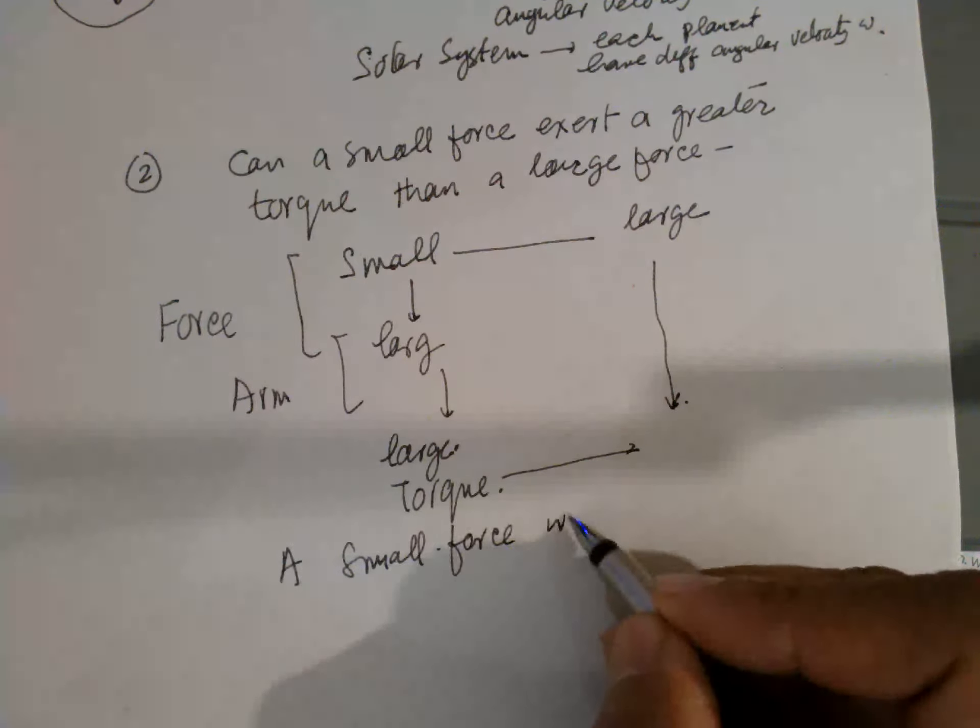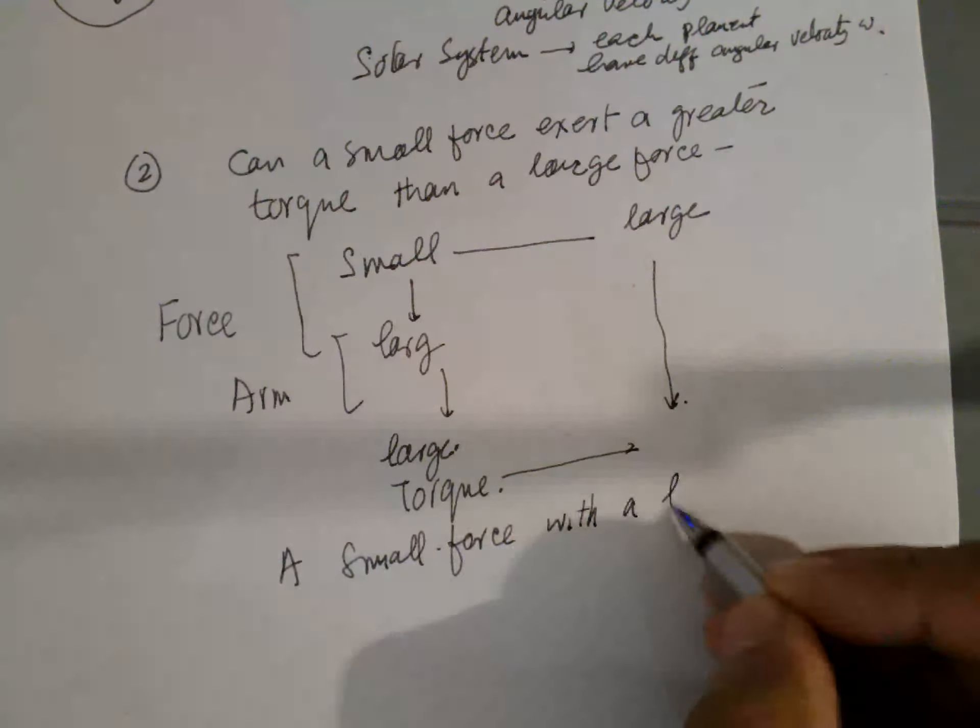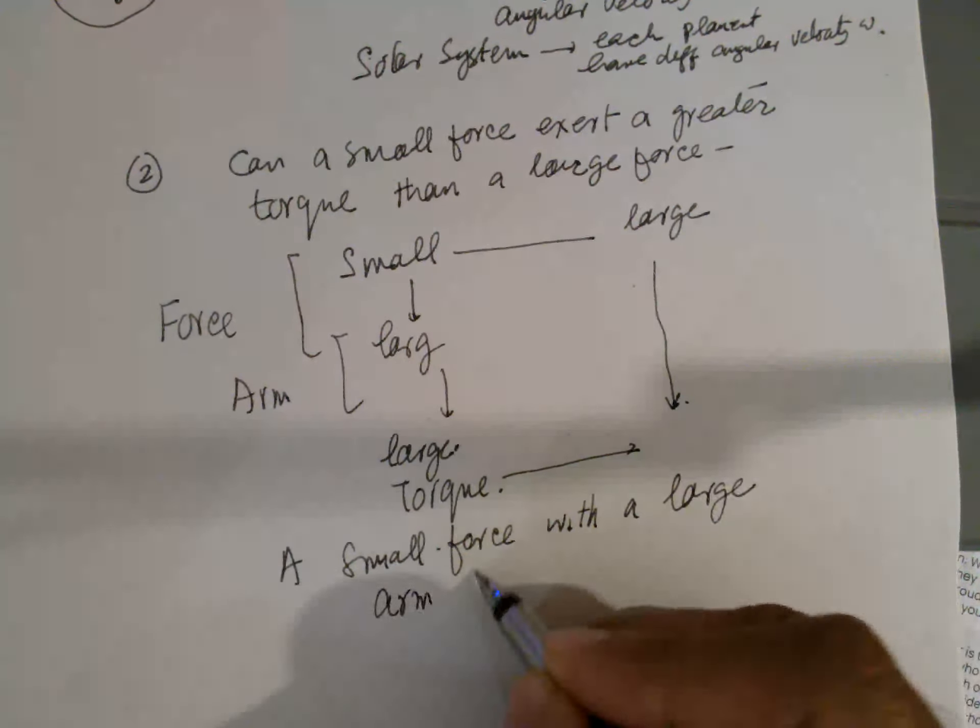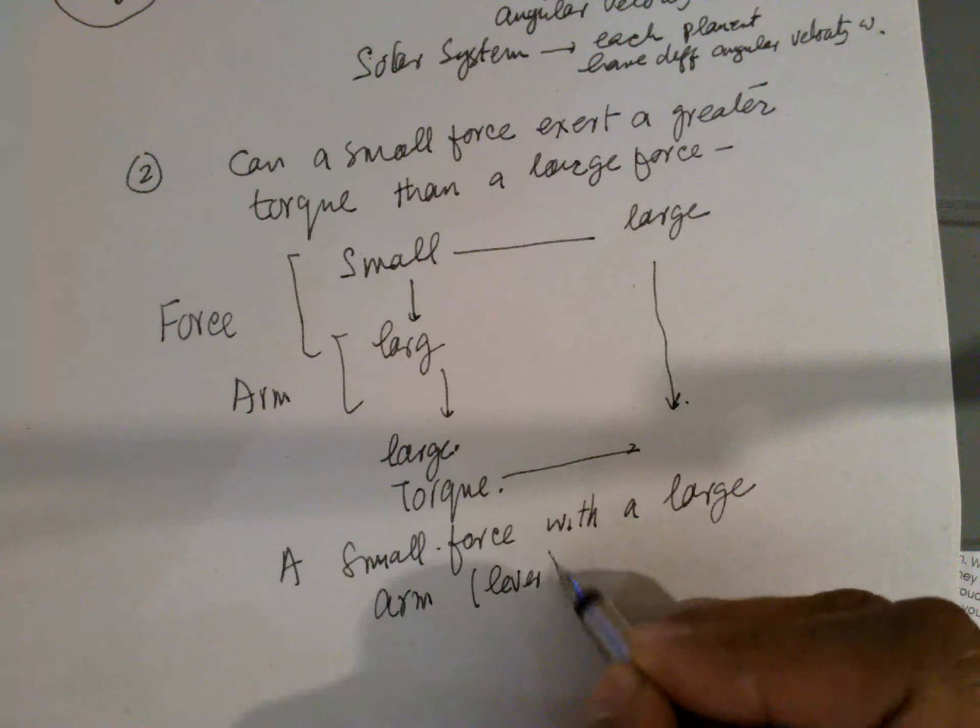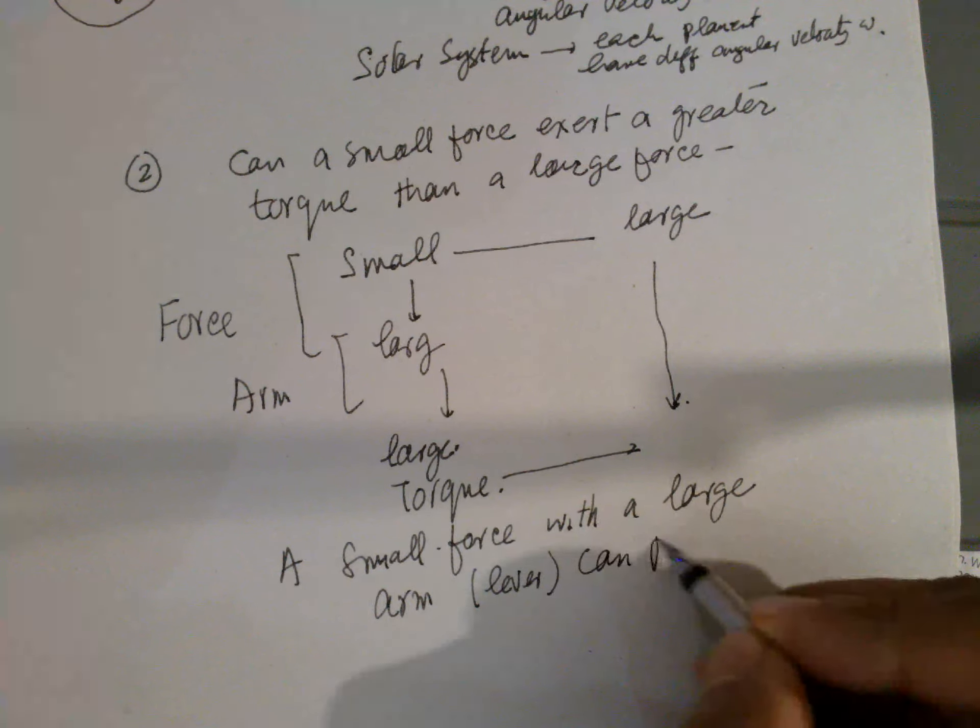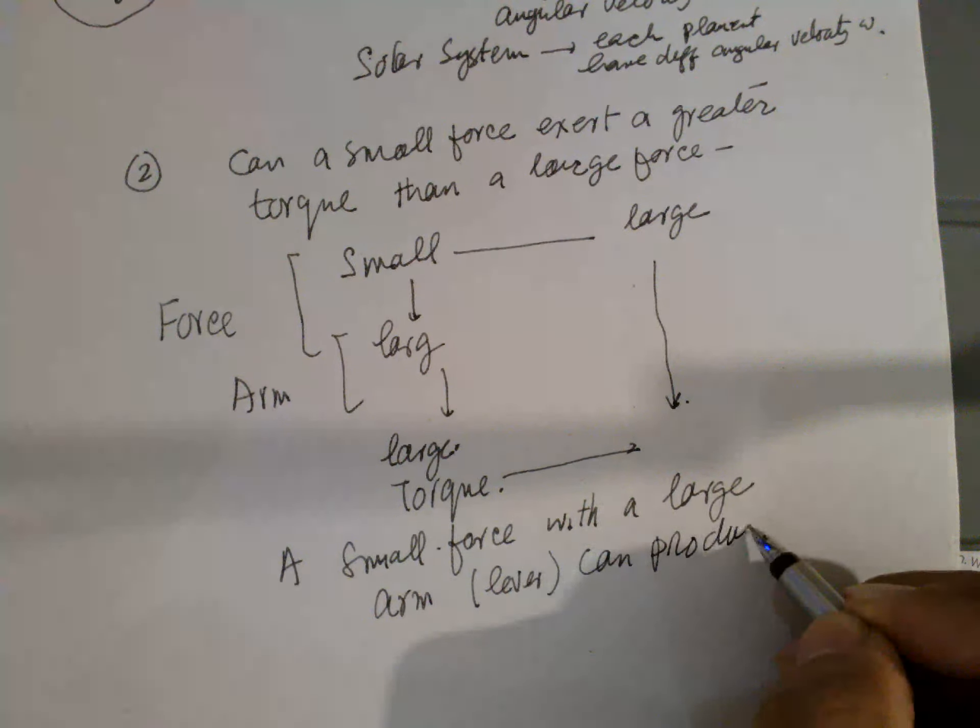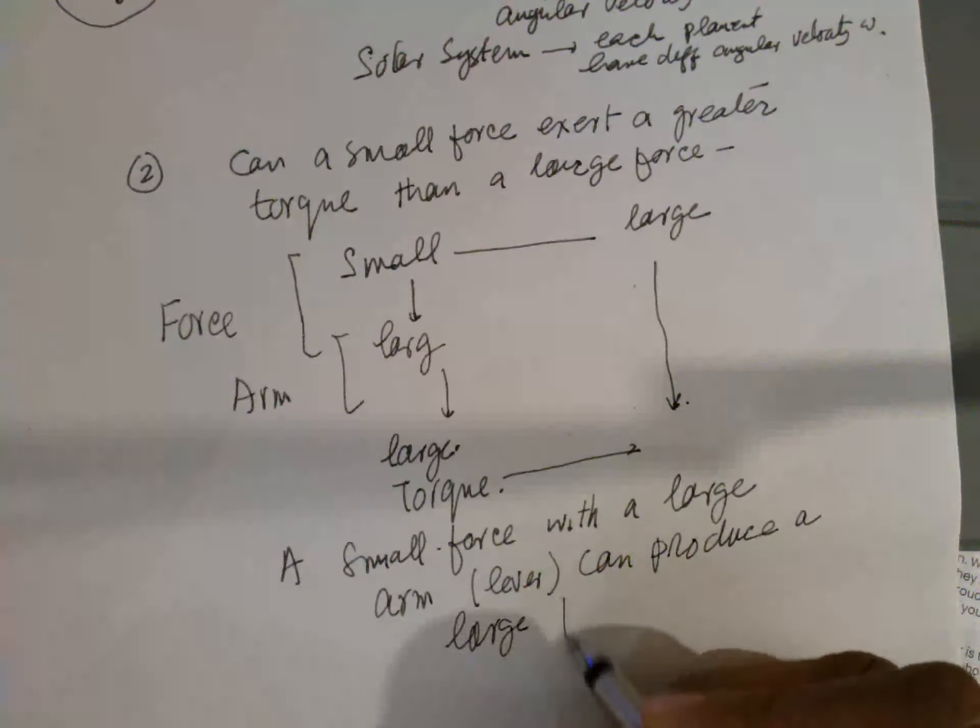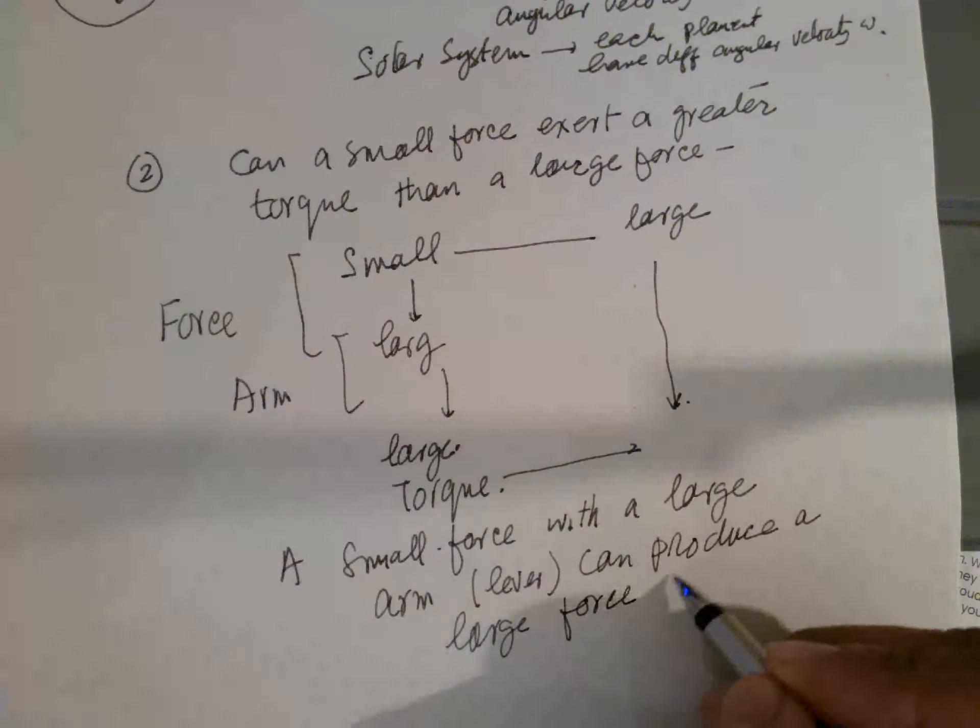A small force with a large arm, which is called a lever, can produce a large torque.